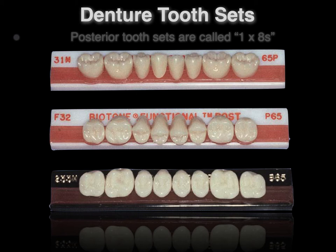Then we have our 1x8's, commonly referred to as your posterior teeth cards. On the top image we have mandibular posterior teeth, and the F32 mold shown is the maxillary posterior teeth. Four cards in total make up a complete set. Some key terms are mold — which refers to the shape of the tooth — and shade, which refers to the color of the tooth.